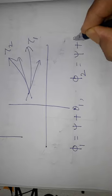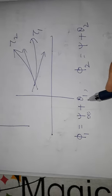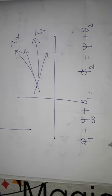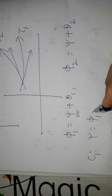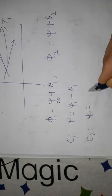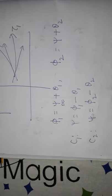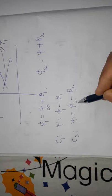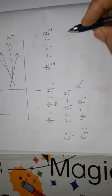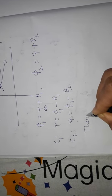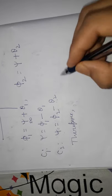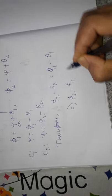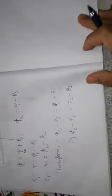For curve c1 and its image gamma1, we have φ₁ = ψ + θ₁, where ψ is the angle of rotation. For curve c2 and gamma2, φ₂ = ψ + θ₂. Notice that ψ is the same for both curves, since ψ = φ₁ − θ₁ = φ₂ − θ₂. Therefore, φ₂ − θ₂ = φ₁ − θ₁, which implies φ₂ − φ₁ = θ₂ − θ₁.